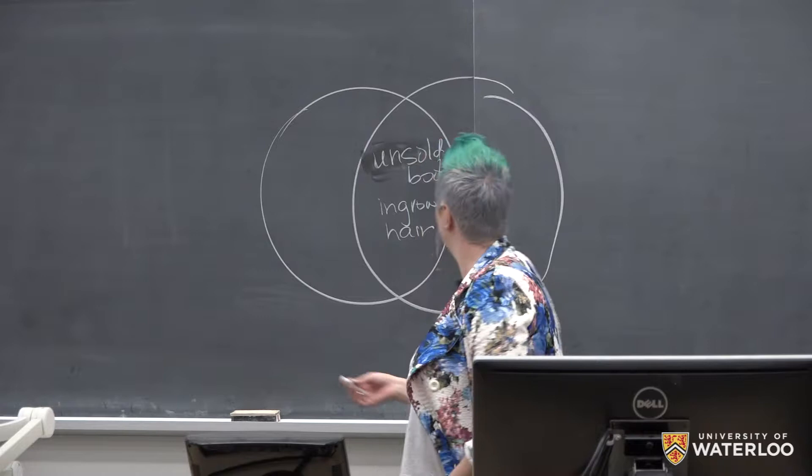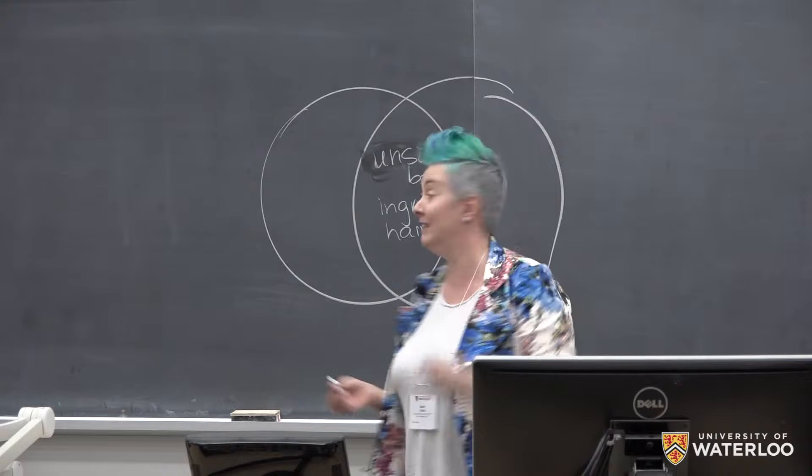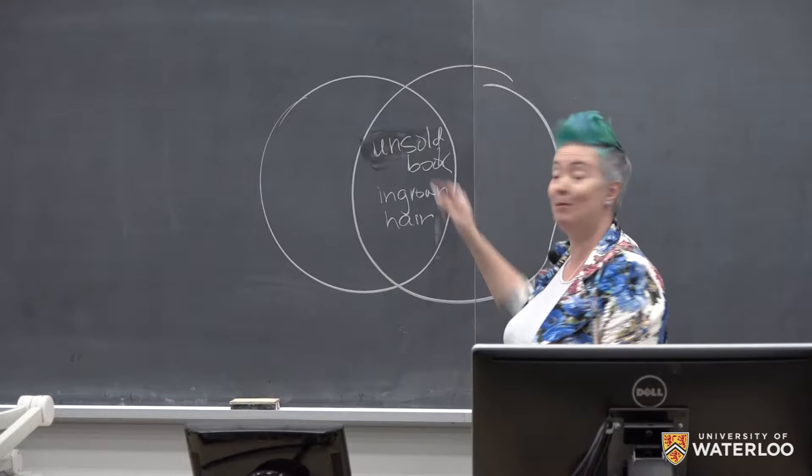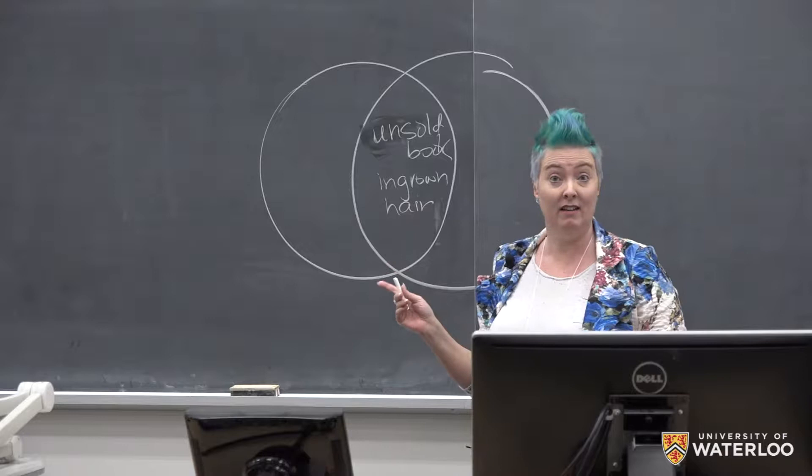If I wanted to make that visualization into a metaphor, what would I do? Erase the outside part? Basically yes — that's actually much more efficient than what I was going to do. Erase the outside part, or lift one circle up and put it right exactly over top. It expresses full superimposition. There are then no edges left, and we have 'an unsold book is an ingrown hair.'